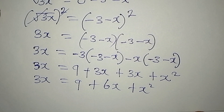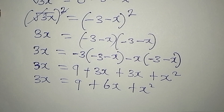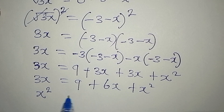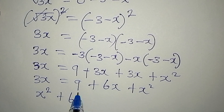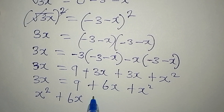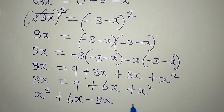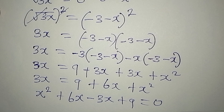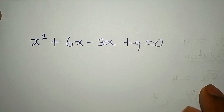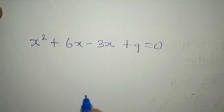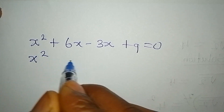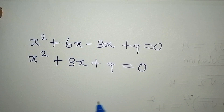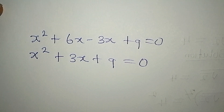We have a quadratic equation. Arranging it with the highest power first: x squared plus 6x minus 3x plus 9 equals zero, which simplifies to x squared plus 3x plus 9 equals zero.